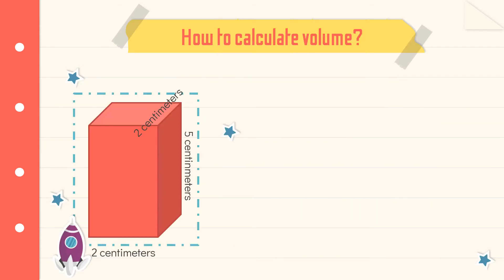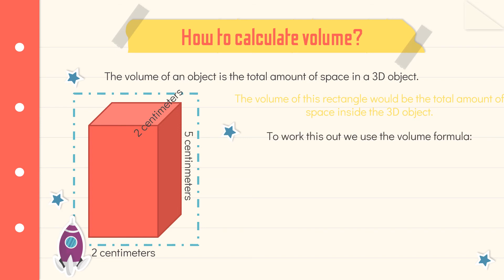Okay, we're going to practice calculating volume. The volume of an object is the total amount of space inside a 3D object. That's just a little reminder for you for what volume is. The volume of this rectangle would be the total amount of space inside the rectangular prism. So let's work it out. We need to use the volume formula. Can you remember it?